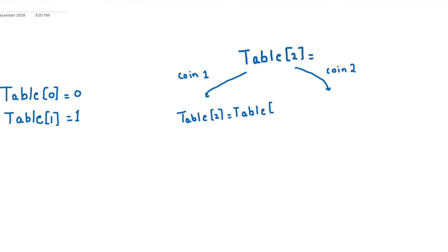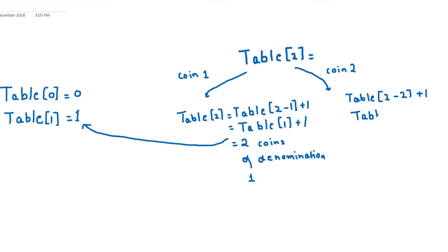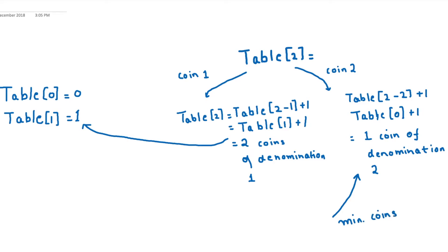Using coin value 1: table[2] = table[2 - 1] + 1 = table[1] + 1. Since table[1] is 1, the result is 2 — meaning two coins of denomination 1. Using coin value 2: table[2] = table[2 - 2] + 1 = table[0] + 1. Since table[0] is 0, the result is 1 — meaning one coin of denomination 2. We choose the minimum, which is 1 coin of denomination 2 to make sum 2.